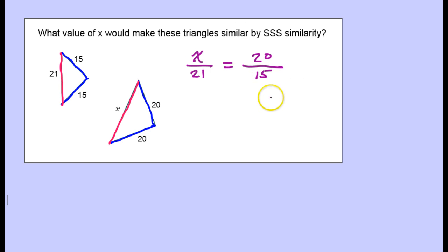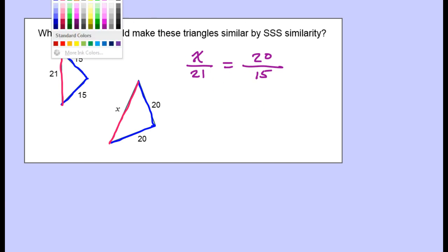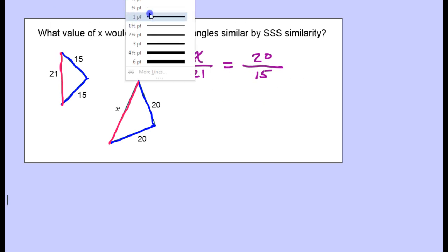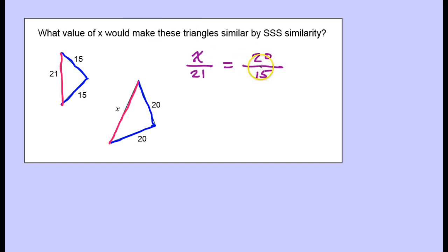Now, I like to reduce fractions whenever I can. So I see this 20 over 15, these are both divisible by 5. So I'm just going to go ahead and do that. So now I've got x over 21 equals 4 over 3.